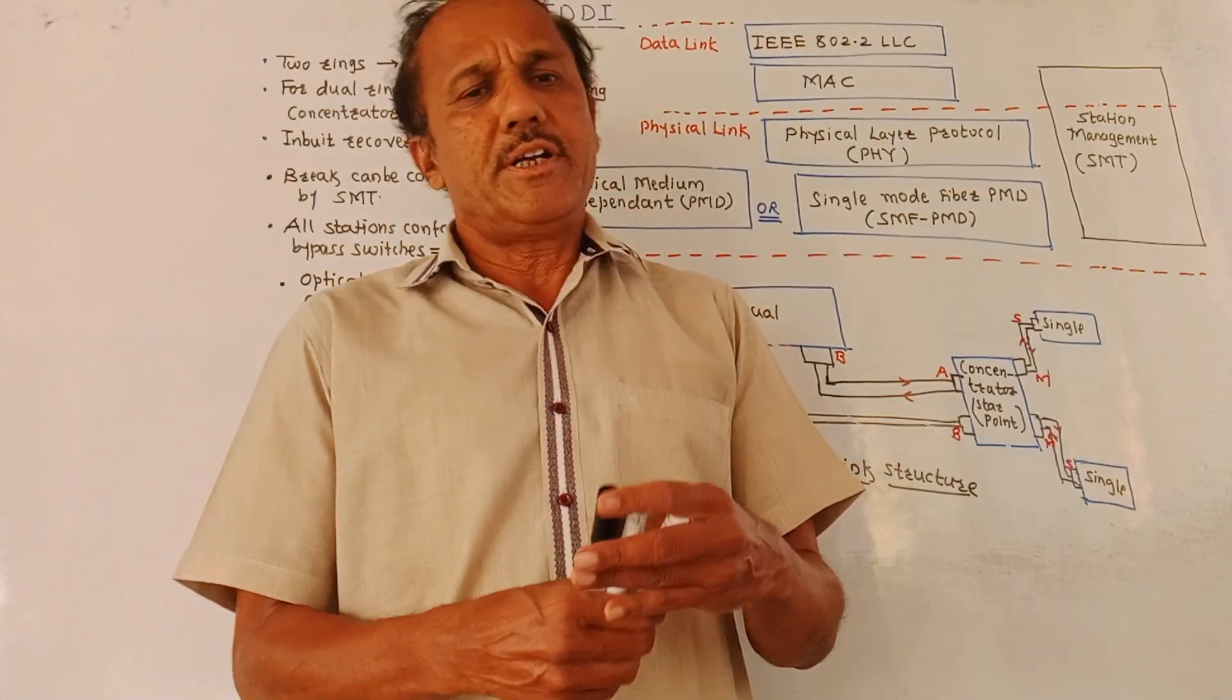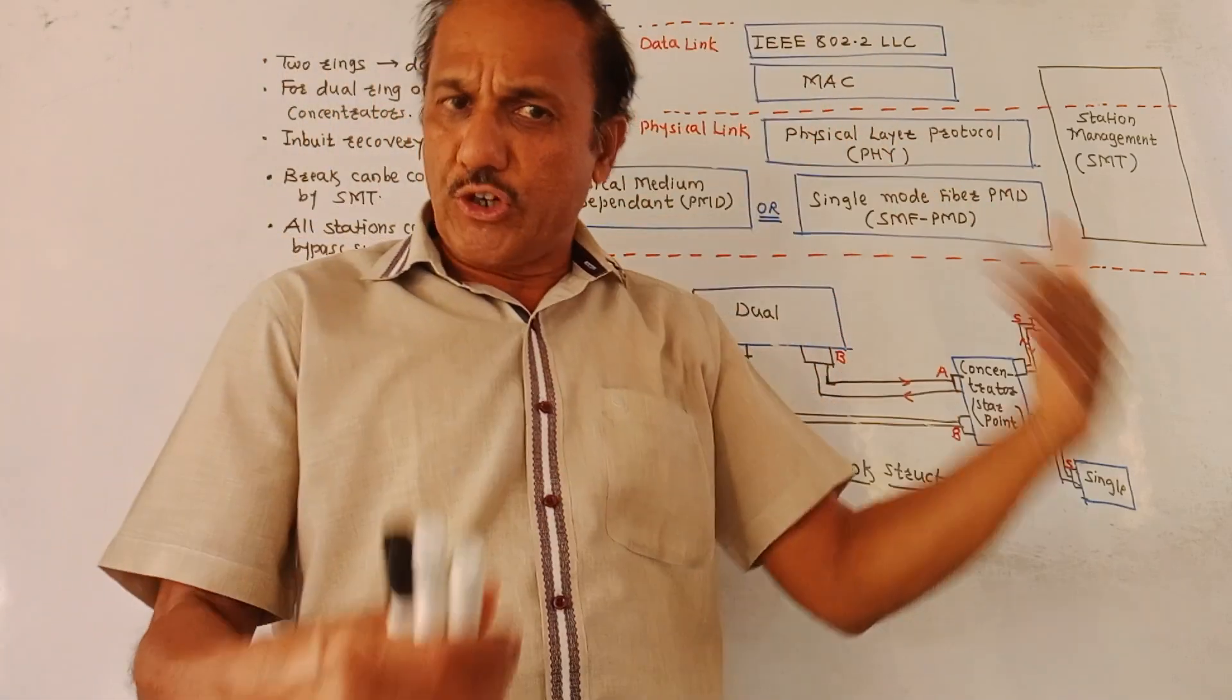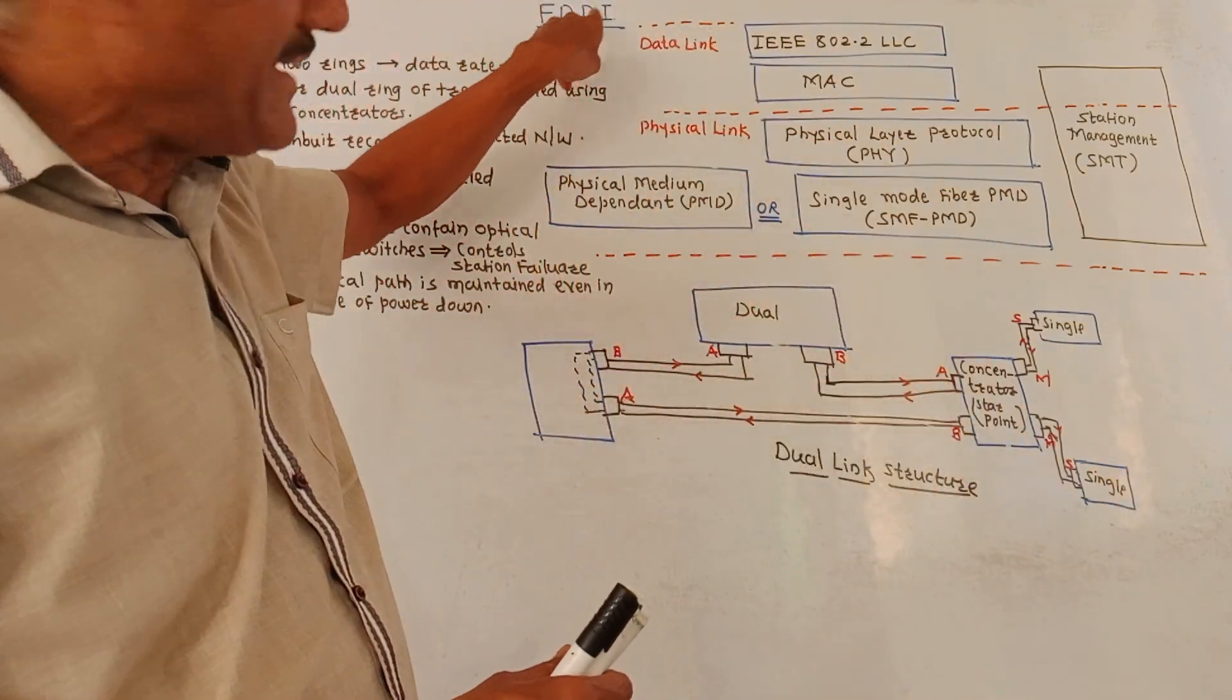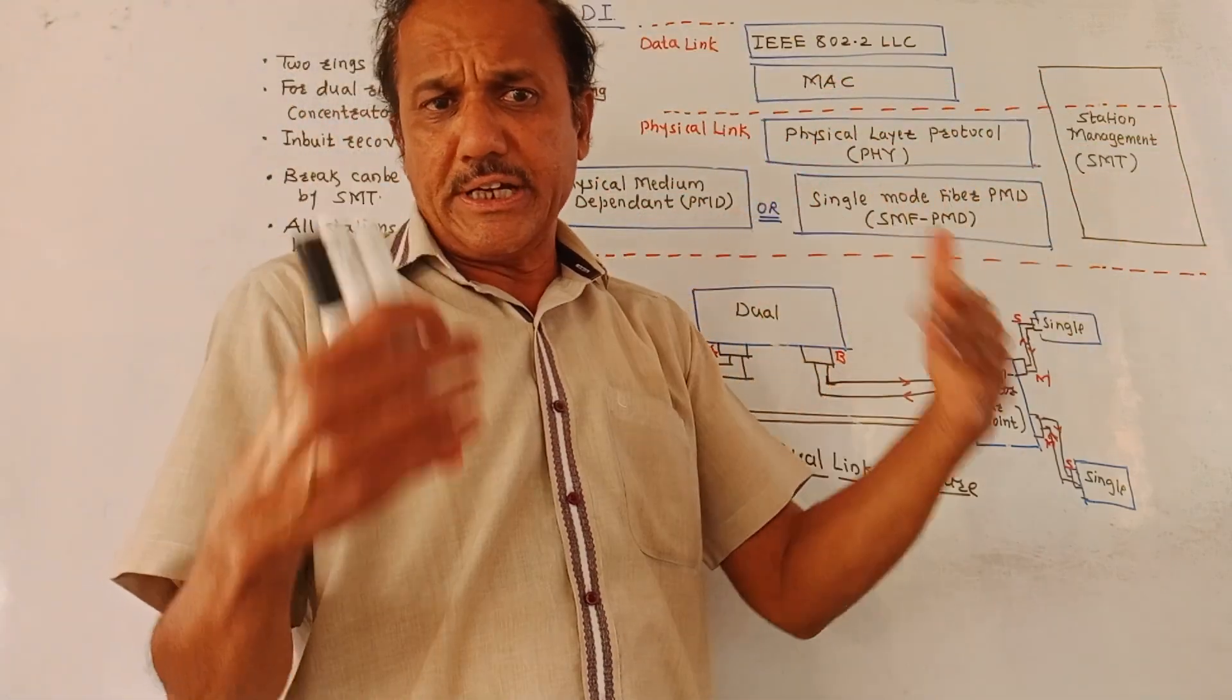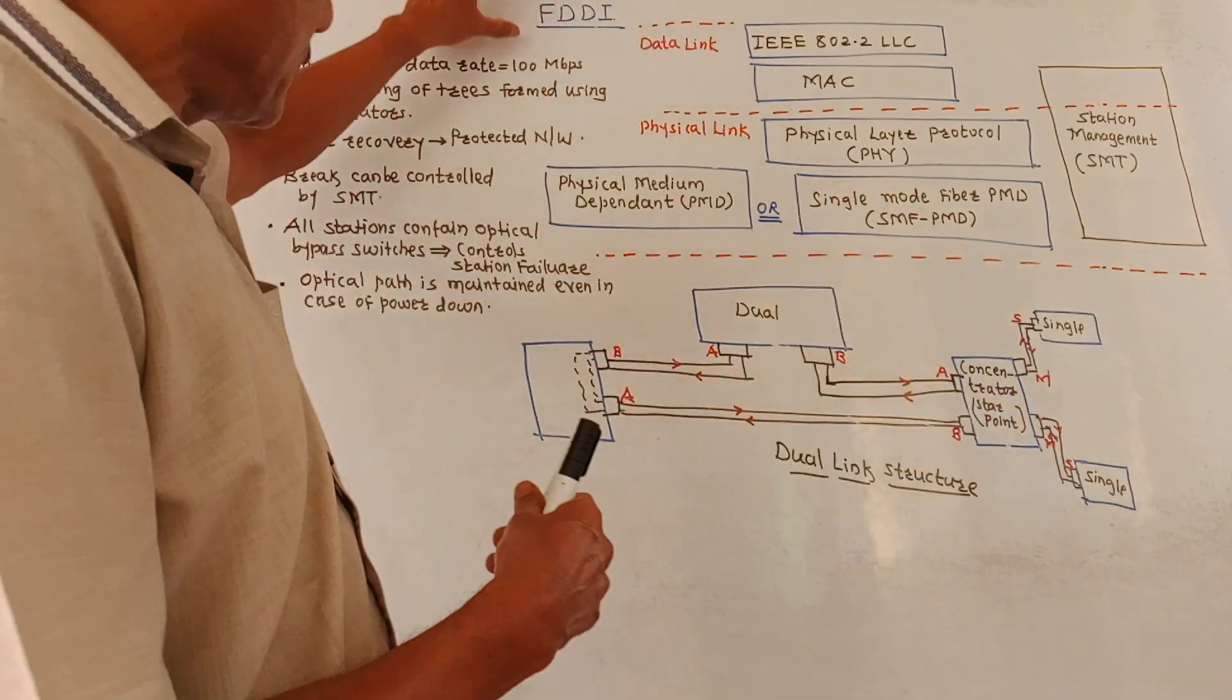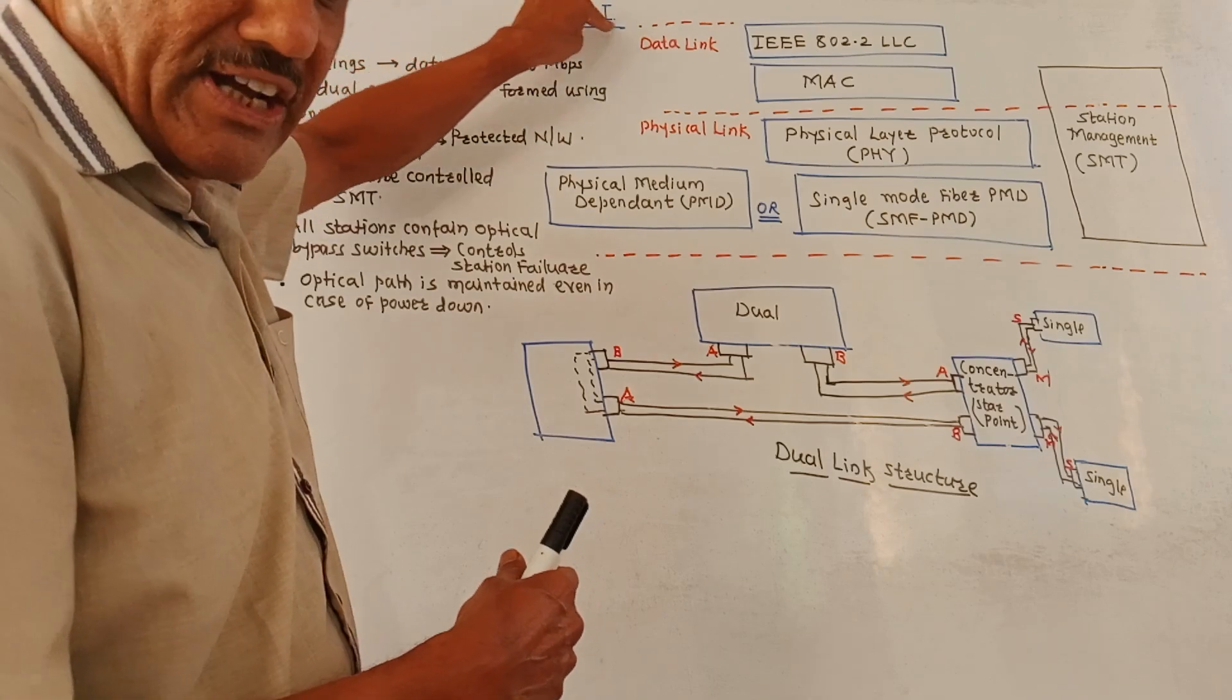Hello and welcome, dear students. This session is FDDI and SONET. FDDI stands for Fiber Distributed Data Interface. In this session, we will also be studying SONET, that is Synchronous Optical Network. First, let us talk about FDDI, that is Fiber Distributed Data Interface.